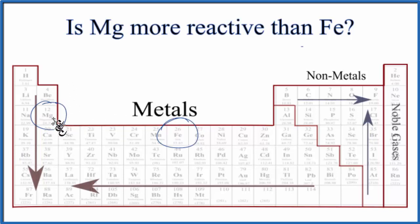And in general, alkaline earth metals are more reactive than the transition metals. So this is a general trend, but we would expect magnesium to be more reactive than iron.